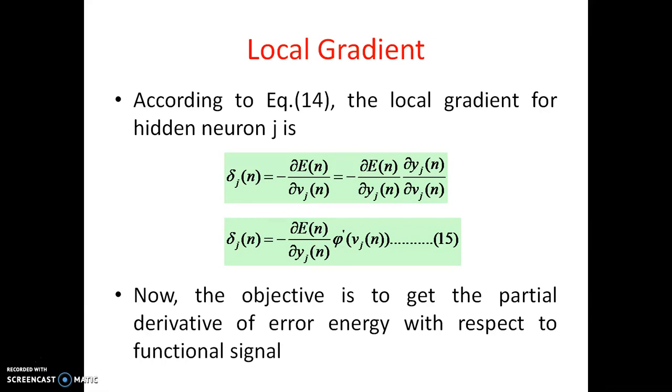We can come to a conclusion based on the equation 9. And finally delta j of N is like this and this is named as equation number 15. Now what we have to do? The object is to get the partial differentiation of error energy with respect to the functional signal dou E of N by dou Yj of N.